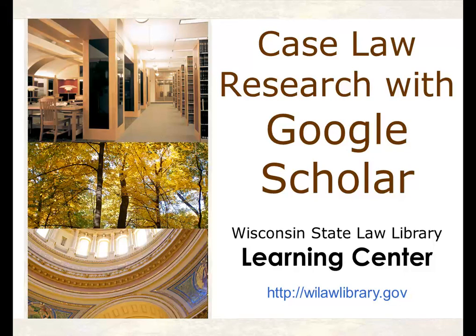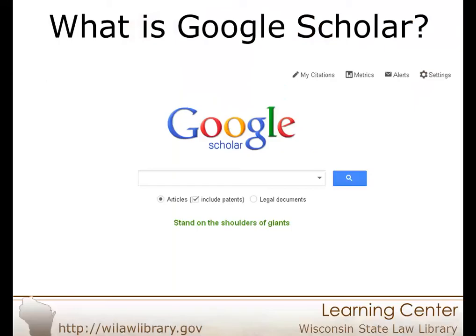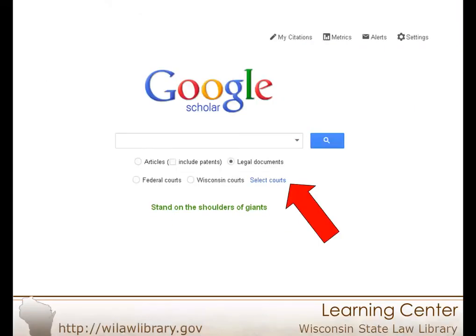Search for legal opinions and articles on Google Scholar. Coverage includes federal appellate and district courts and state appellate courts. Quick Search searches Google Scholar's entire opinion and legal article database.